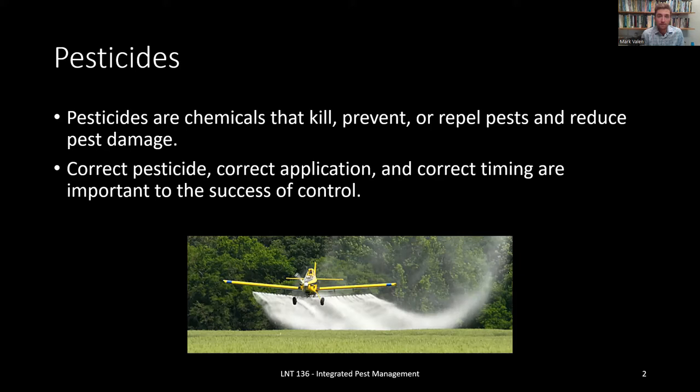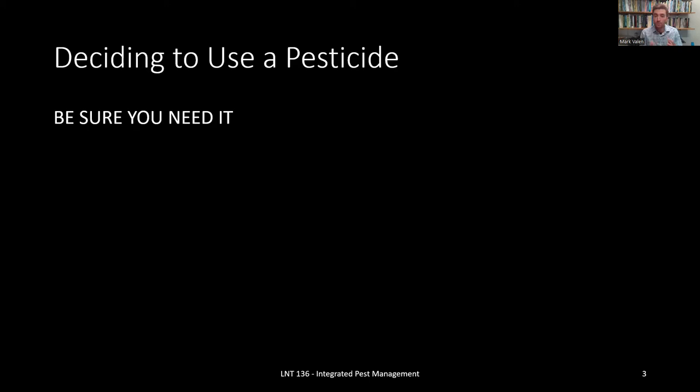Those are just some of the names applied to various types of pesticides. They're all pesticides because they're designed to control pests, and primarily it's meant to kill, but it could also be for preventing or repelling and overall reducing their damage. So when you're deciding if you want to use a pesticide, remember our IPM hierarchy and the fact that chemical control would be at the very top of that pyramid. We would try to use other methods first, if at all possible, and mainly we can sum it up with the statement: be sure you need it.